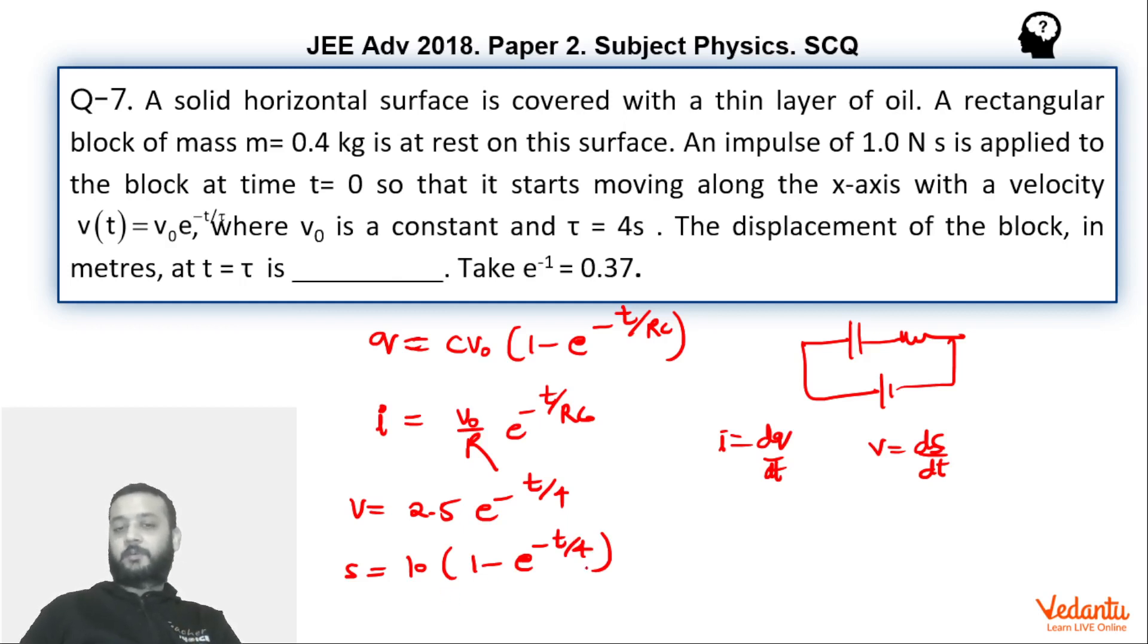Now if you put the value of t as 4 here, you can see that s at t equals 4 or tau is nothing but 10 times 1 minus e to power minus 1. Which is the same value 6.3 that we have gotten.